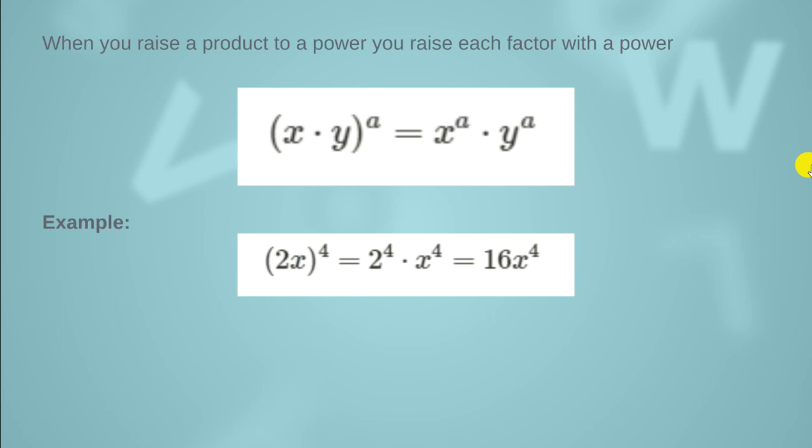When you raise a product to a power, you raise each factor to that power. Here you can see that we have x times y — that is, the product of x and y — raised to the power a. So every single part of the product carries a as its own power, meaning x raised to the power a multiplied by y raised to the power a.